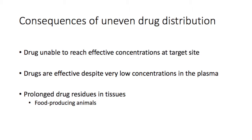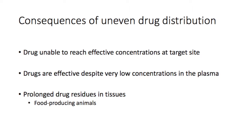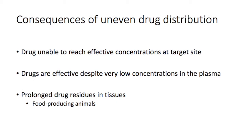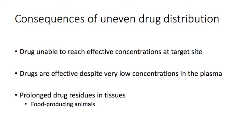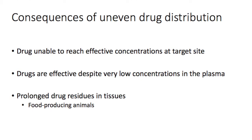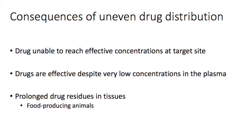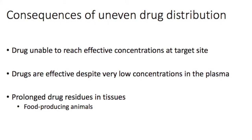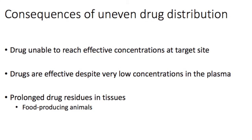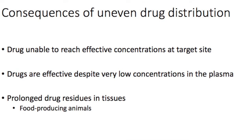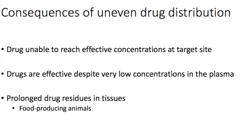The uneven distribution of drugs in the body has several consequences, including the inability to reach effective concentrations at the target site if the drug accumulates in non-target tissues. It can also lead to drugs being effective even though plasma concentrations are very low, if they happen to accumulate in tissues that are the site of action. Finally, a consequence unique to veterinary medicine is that drugs accumulating in tissues could lead to prolonged residues in food-producing animals.